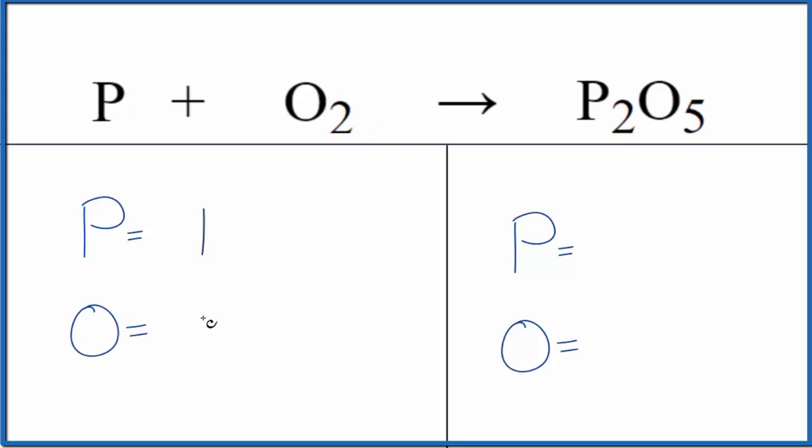One phosphorus and two oxygens in the reactants, two phosphorus, five oxygen atoms in the products. Probably the best thing to do when we have an odd number here is get this to be an even number.